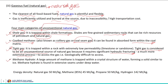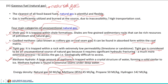Methane hydrate is another class of unconventional natural gas, where a large amount of methane is trapped within a crystal structure of water, forming a solid similar to ice. Methane hydrate is found in extensive seams under deep water. In terms of energy density: natural gas is around 50 MJ/kg, methane (approximately 85% pure) is around 45 MJ/kg, propane is 50 MJ/kg, and hydrogen has the highest energy density at around 142 MJ/kg.